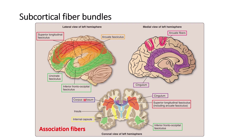Also visible are structures that are not part of the association fibers: the corpus callosum, which connects one side to the other, and the internal capsule, which connects the cortex with the lower parts of the brain. These two are not part of the association fibers.